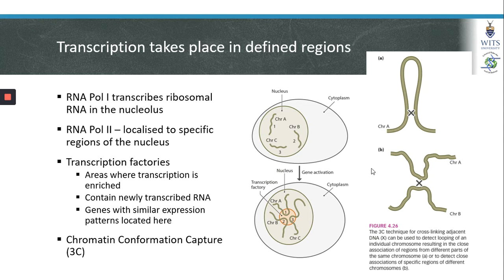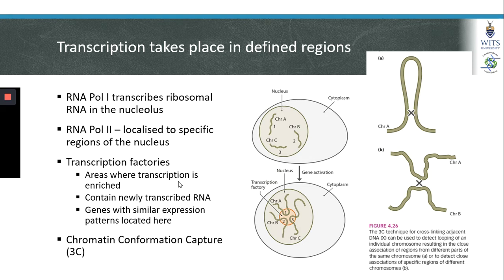We have now discovered that RNA polymerase 2 is also localized to specific regions of the nucleus, and these regions are called transcription factories. A transcription factory is an area in which transcription is enriched. If you remember what we discussed in week one, we spoke about the formation of TADs, or topology associated domains, and how their movement is dynamic within the nucleus. We now know that regions of DNA that are uncoiled can be localized to a unique location within the nucleus, and it is at this location that transcription can be enriched.